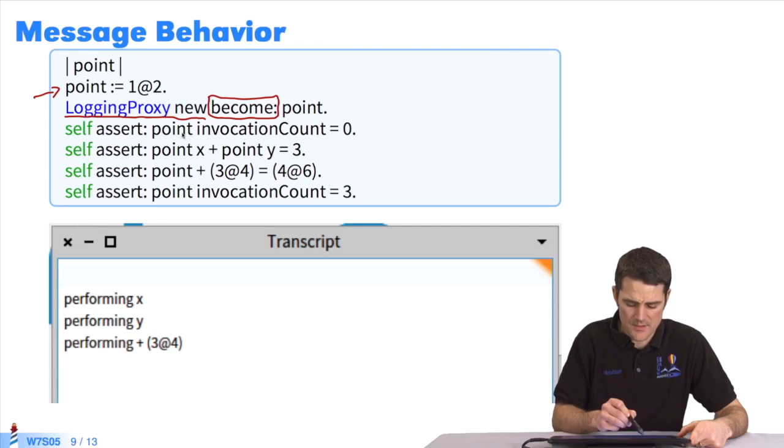Every time we send it a message, it will display in transcript, and the counter will be incremented. This is what we did in doesNotUnderstand. At the end, the counter shows a value of 3.